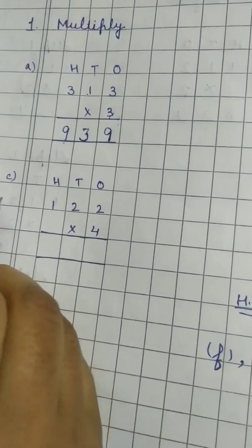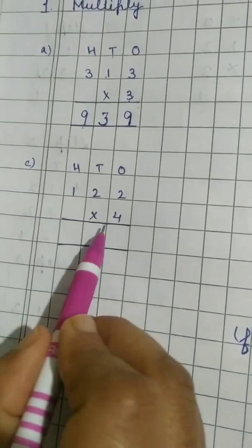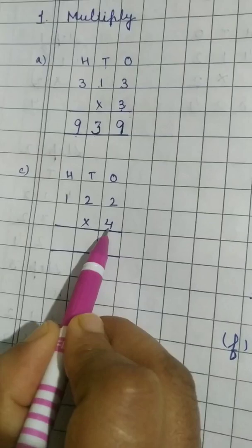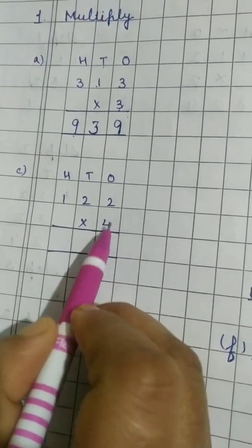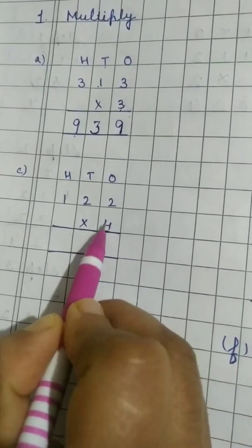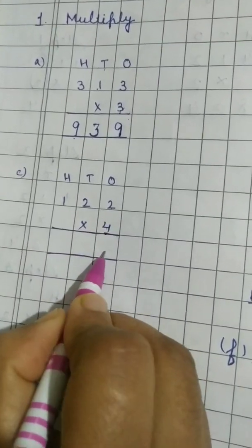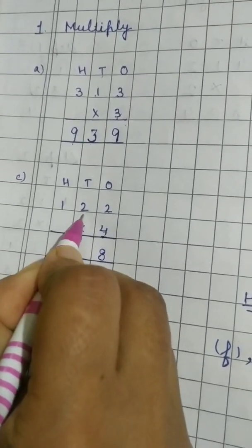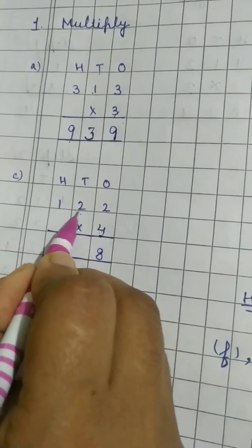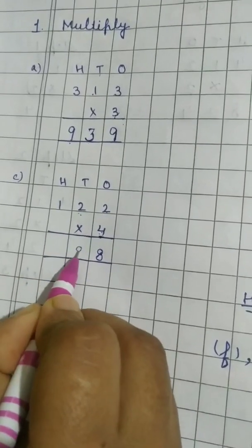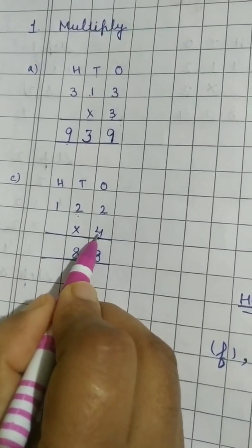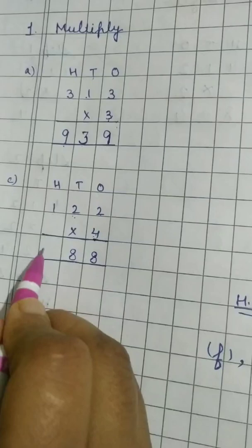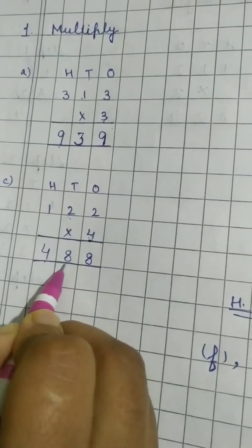The next part is C part I have done. Here we have to take the table of 4. Now digit at 1's place first is 2. 4 1's are 4. 4 2's are 8. Then again 2. Now 4 1's are 8. Now last one is 4 1's are 4. So answer is 488.